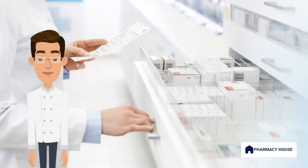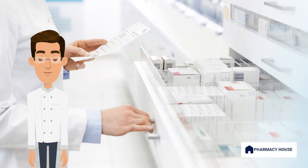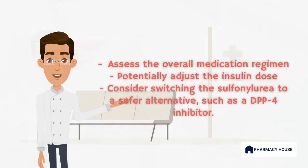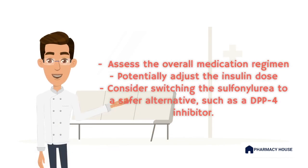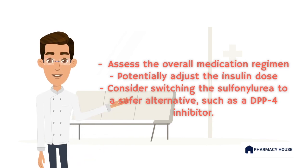In this scenario, let's say the patient is on multiple medications, including a sulfonylurea agent known for its hypoglycemic effects. We recommend pausing the video here and writing down what you would do next. In your answer you should have discussed assessing the overall medication regimen, potentially adjusting the insulin dose, and even considering switching the sulfonylurea to an alternative medication, such as a DPP-4 inhibitor.